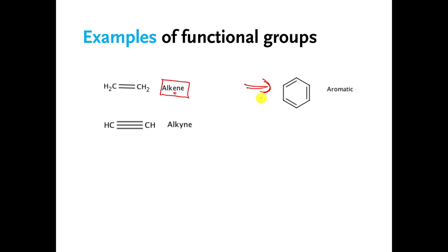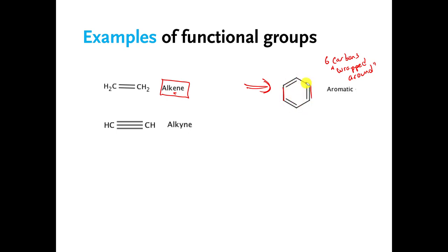This one over here — you have to have all of these features: six carbons wrapped around in a ring, and you have to have alternating double and single bonds. They have to alternate: double, single, double, single, double, single. If you have both of those things — six carbons wrapped around and alternating double and single bonds — then you say that your molecule has an aromatic functional group.